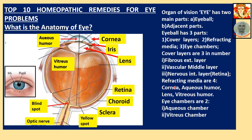Refracting media are four. To start with, there is the cornea — this transparent portion at the front. Light enters through the cornea.